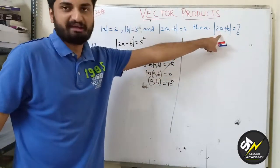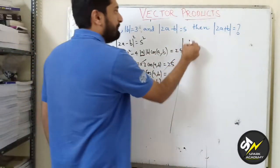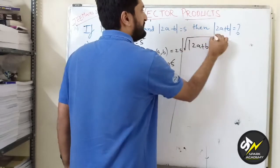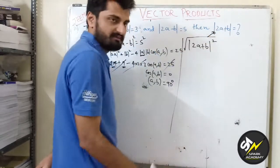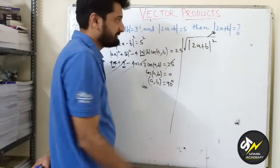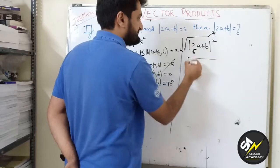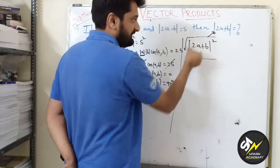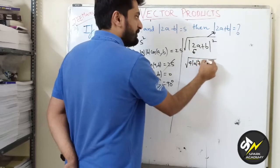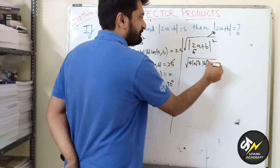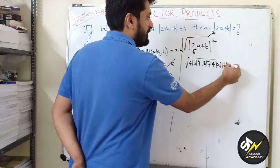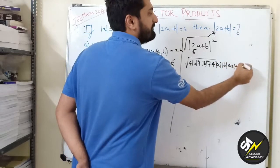Now using this I need to calculate this. So |2a + b|² and root will give me this. Since square and root will get cancelled, I will get |2a + b|. Now how can I write this? This I can write as 4 times |a|² + |b|² + 2 times 2 is 4 times a·b, which is |a||b|cos(a,b).